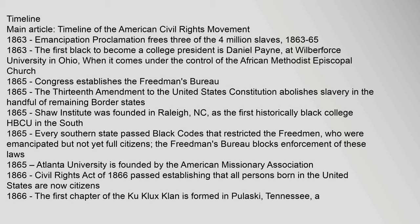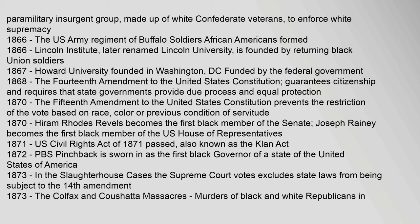In 1866, the Civil Rights Act established that all persons born in the United States are citizens; the first chapter of the Ku Klux Klan was formed in Pulaski, Tennessee; the U.S. Army formed the Regiment of Buffalo Soldiers; and Lincoln Institute was founded by returning black Union soldiers. In 1867, Howard University was founded in Washington, D.C., funded by the federal government. In 1868, the Fourteenth Amendment guaranteed citizenship and equal protection. In 1870, the Fifteenth Amendment prevented the restriction of the vote based on race; Hiram Rhodes Revels became the first black member of the Senate; and Joseph Rainey became the first black member of the U.S. House of Representatives. In 1871, the Civil Rights Act of 1871 (the Klan Act) was passed. In 1872, P.B.S. Pinchback was sworn in as the first black governor of a U.S. state.